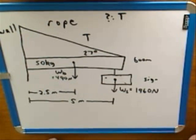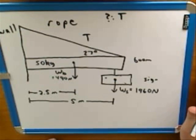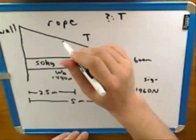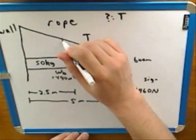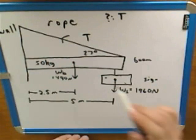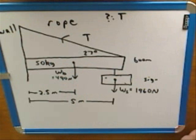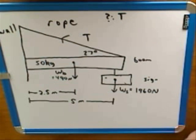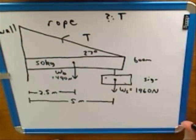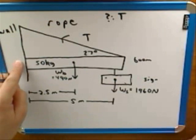What direction is the tension force in? Tension forces are always exerted along the rope. So I can draw this arrow along the rope to show the direction of that tension force.